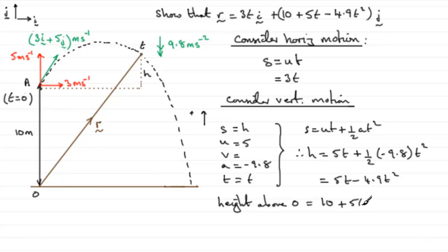So when it comes to r, we've got therefore r equals 3t in the i direction, followed by in the j direction all of 10 plus 5t minus 4.9t squared. That's in the j direction. Okay, so there you go, we've proved that result then.